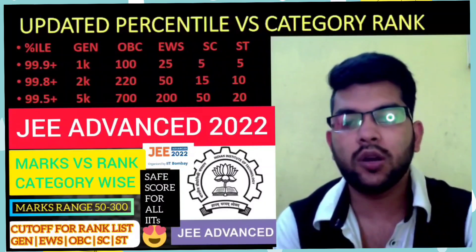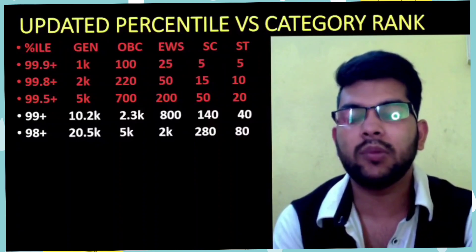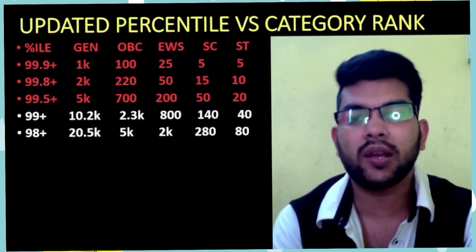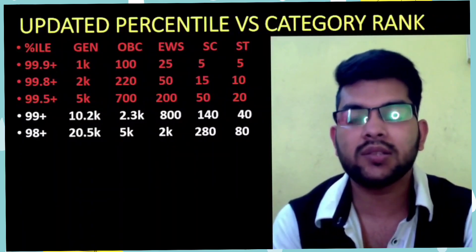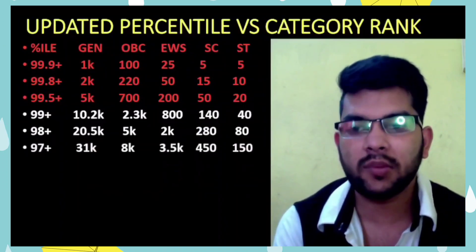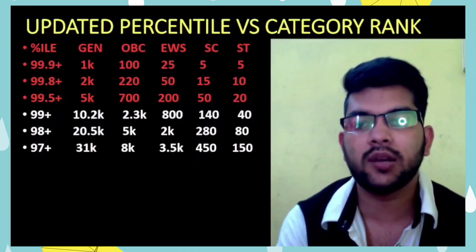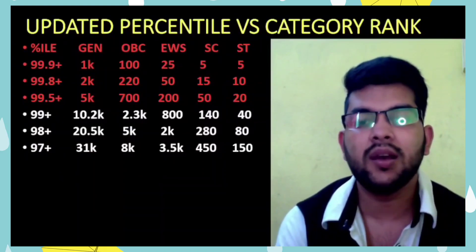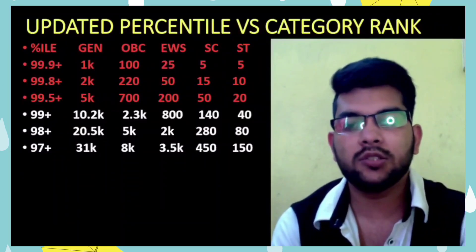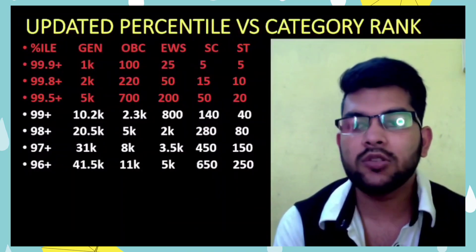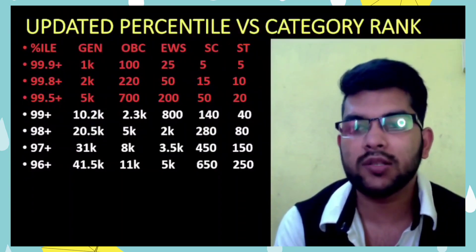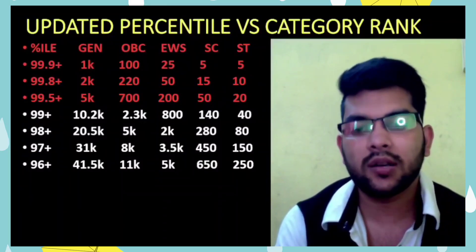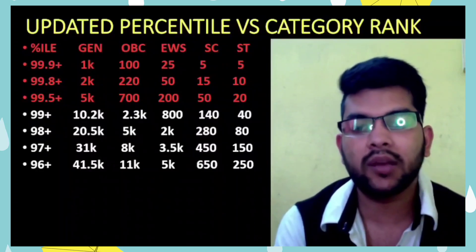For 98 percentile, General rank under 20,500, OBC under 5000, EWS under 2000, SC under 280, ST under 80. For 97+ percentile, General under 31,000, OBC under 8000, EWS under 3500, SC under 450, ST under 150. For 96+ percentile, General under 41,500, OBC under 11,000, EWS under 5000, SC under 650, ST under 250.